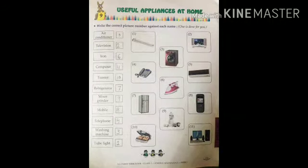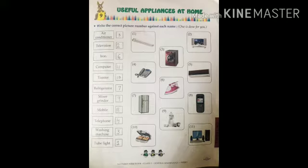Good morning students, welcome to Sankrita School. In the previous class we learned about kitchen appliances. Now this class we start lesson number nine: Useful Appliances at Home, page number 183. Children, let's start. Write the correct picture number against each name. A picture is given here and we have to write the number in front of the name. The first one is already done for you.